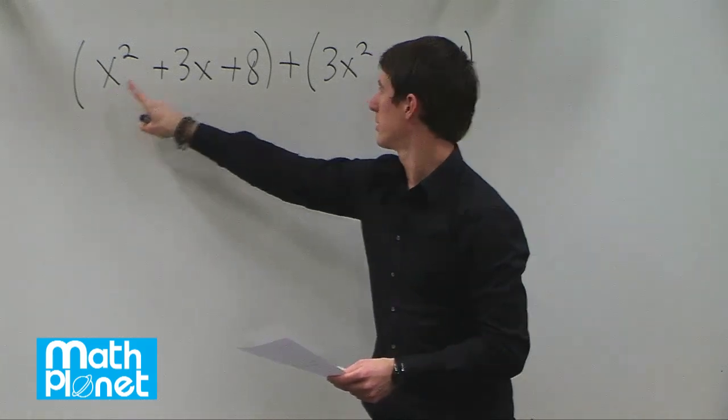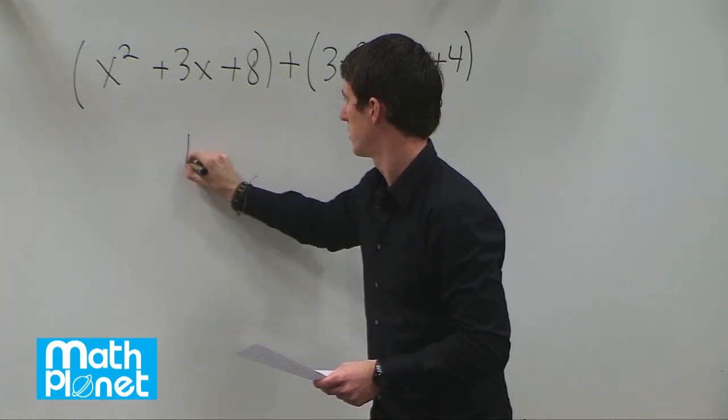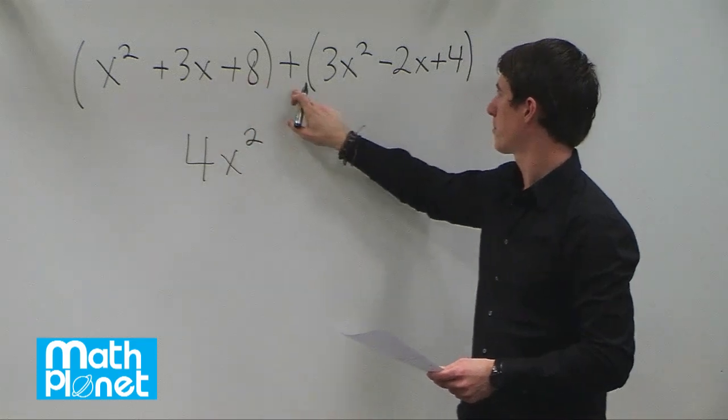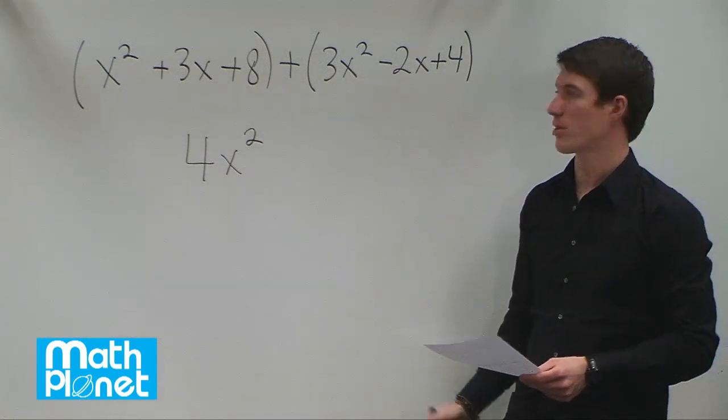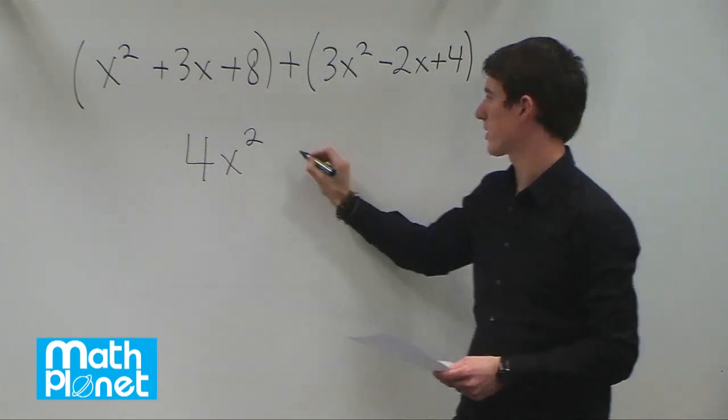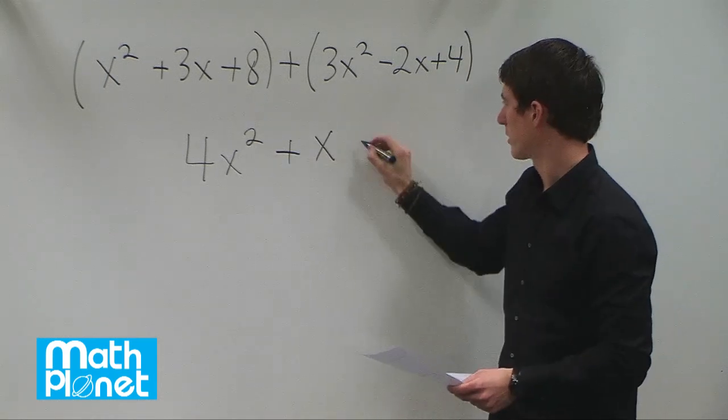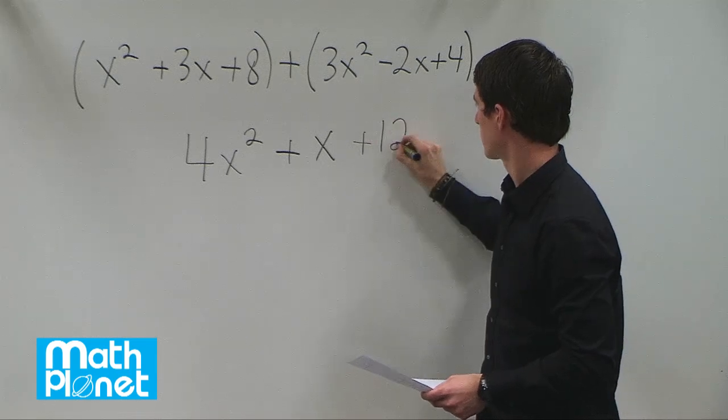So x squared plus 3x squared gives us 4x squared. 3x plus negative 2x or 3x minus 2x gives us just a single x value. And finally 8 plus 4 gives us 12.